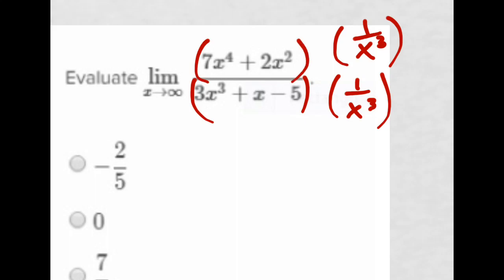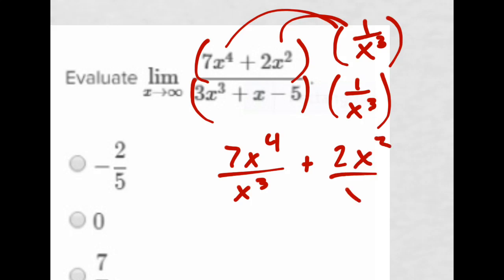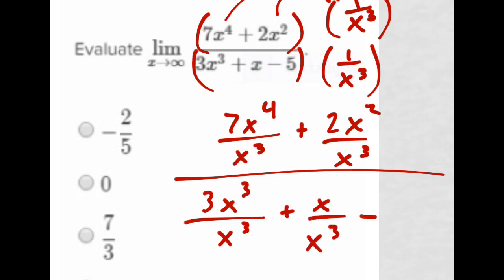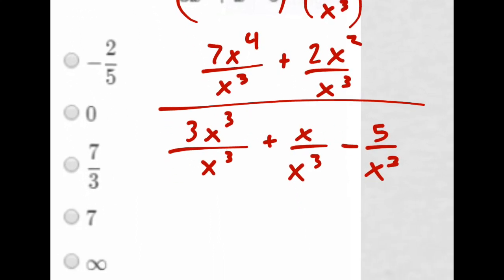I'll distribute this in. In the top, I get 7x to the fourth over x to the third plus 2x squared over x to the third. I'm putting it in the denominator for each term. Same idea on the bottom: 3x cubed over x cubed, plus x over x cubed, minus 5 over x cubed. Now I'll simplify.